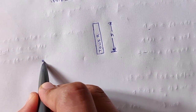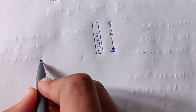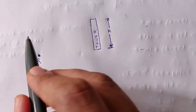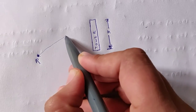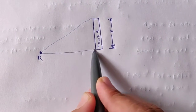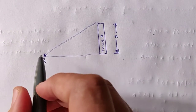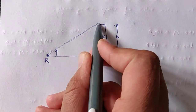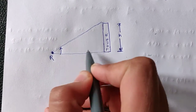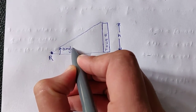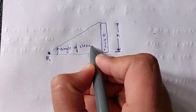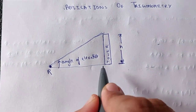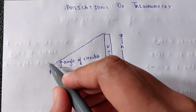Suppose you are standing here — let's name you Rick. You are standing here and you can see the top of the tower and the bottom of the tower. The angle formed between your line of sight to the bottom and the top of the tower is called the angle of elevation. The line along which you look is called the line of sight — we usually look at the top of the tower, so this is the line of sight.